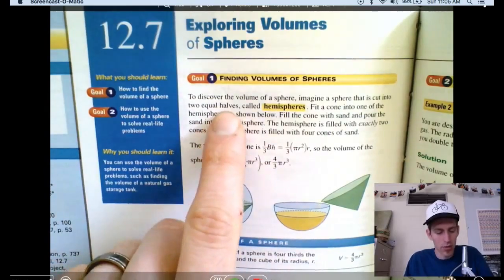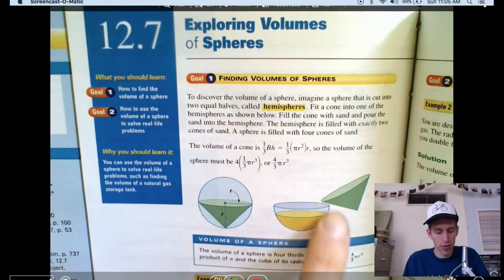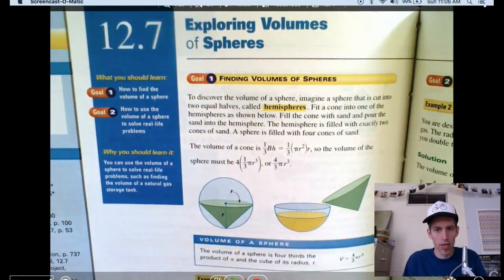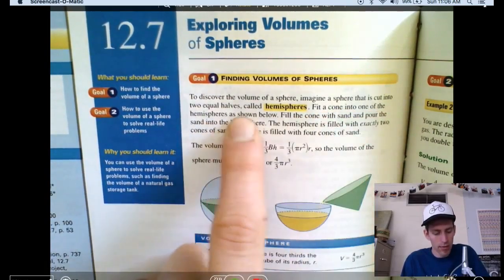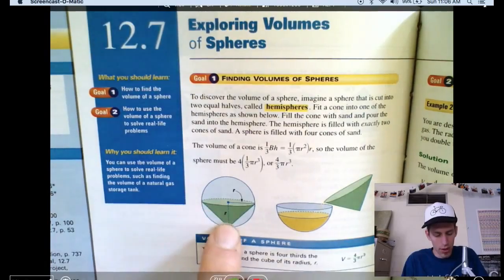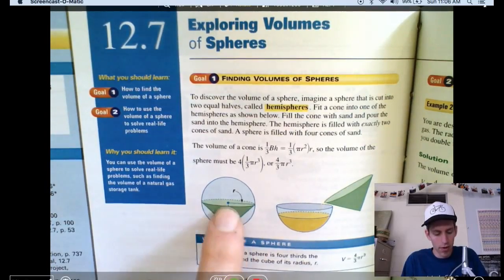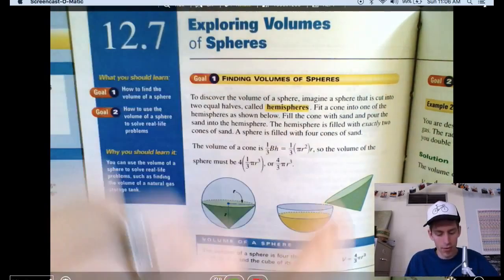Imagine a sphere that is cut into two equal halves. These are called hemispheres, just like this, right? Like our Earth's hemispheres. Fit a cone into one of the hemispheres as shown below, like this green cone right here. If you fit a cone into the hemisphere like that, something cool happens.